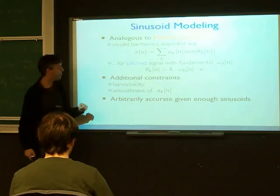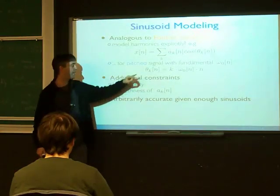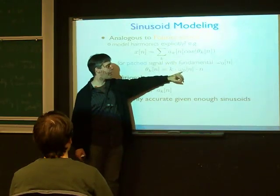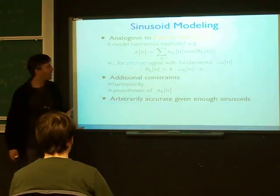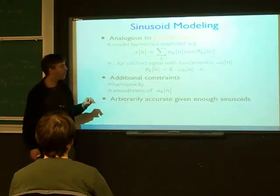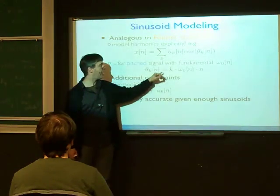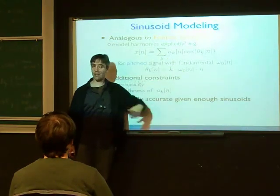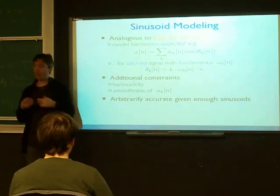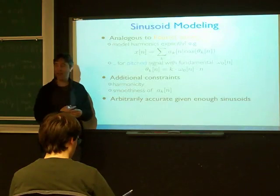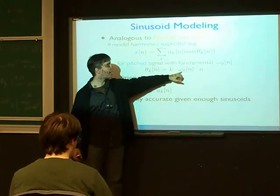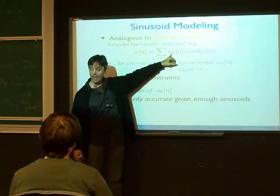We have the assumption of harmonicity implicit in this model. In theory we could have any function, but if A_k(n) and ω_0(n) varied dramatically from sample to sample it wouldn't give us what we expect. We assume A_k(n) and ω_0(n) are slowly varying, so that over a narrow window we can assume they're locally constant. When we do a short-time Fourier transform on a local window, we get harmonic peaks at multiples of some locally constant ω_0, with magnitudes reflecting the strength of the individual harmonics A_k at that time.